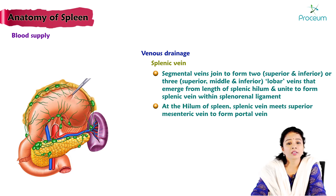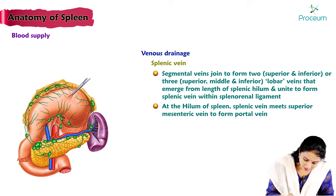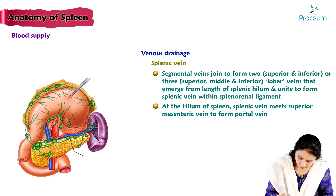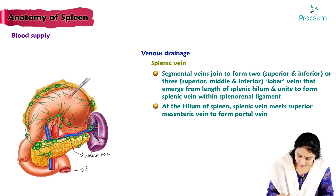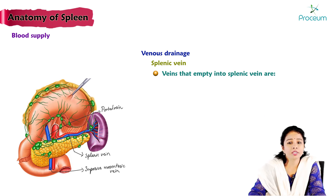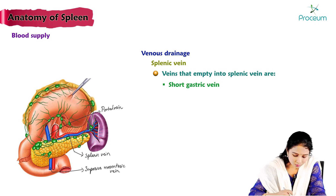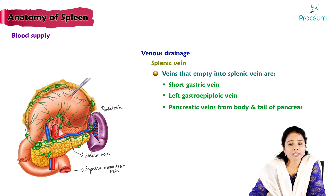At the hilum of the spleen, the splenic vein meets the superior mesenteric vein — posterior to the neck of the pancreas — to form the portal vein. Veins emptying into the splenic vein include the short gastric veins draining the posterior wall of the stomach, the left gastroepiploic vein, pancreatic veins mainly from the body and tail of the pancreas, and the inferior mesenteric vein.